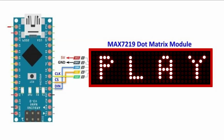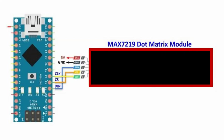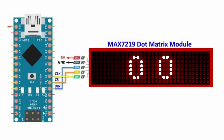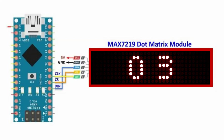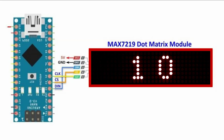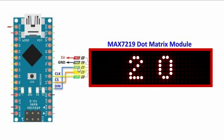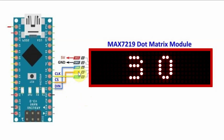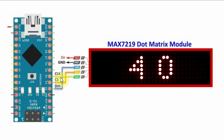The circuit diagram shows the interfacing of the MAX7219 8x32 dot matrix module with the Arduino. The data pin is connected to pin D2, chip select to D3, and clock to D4.